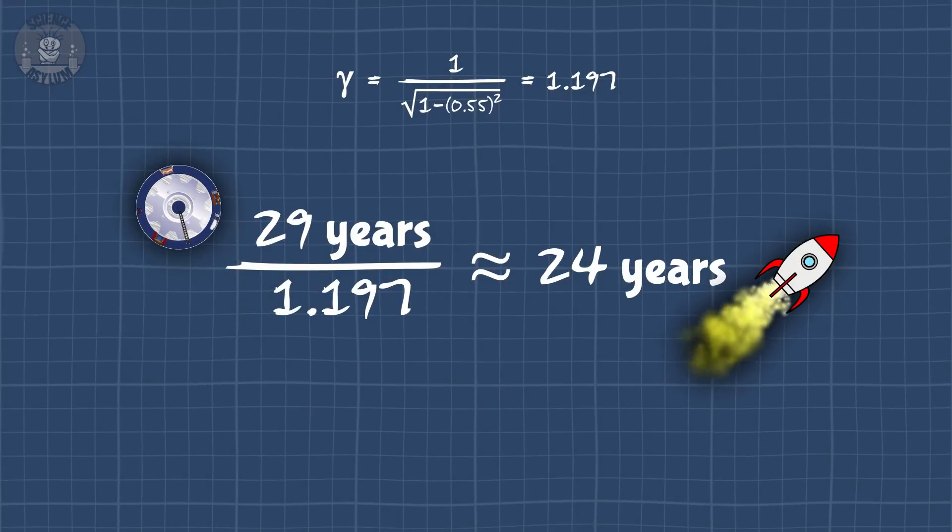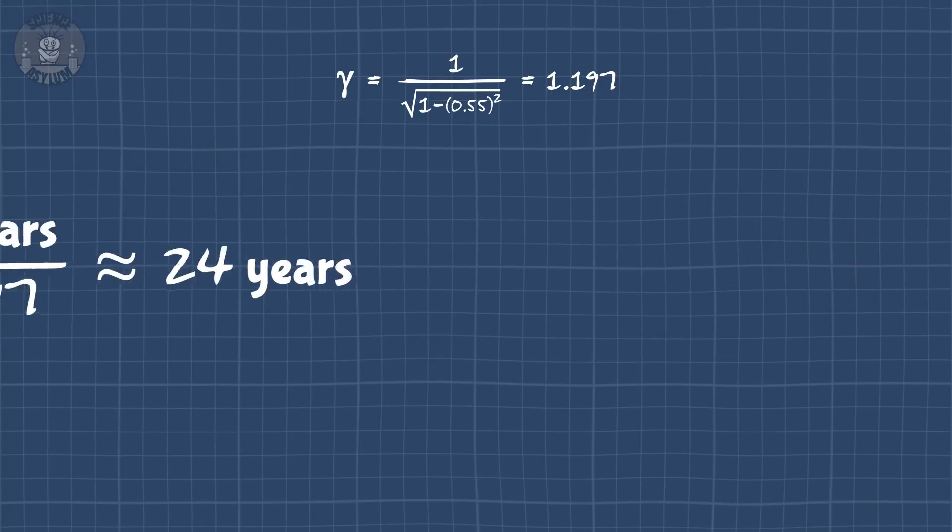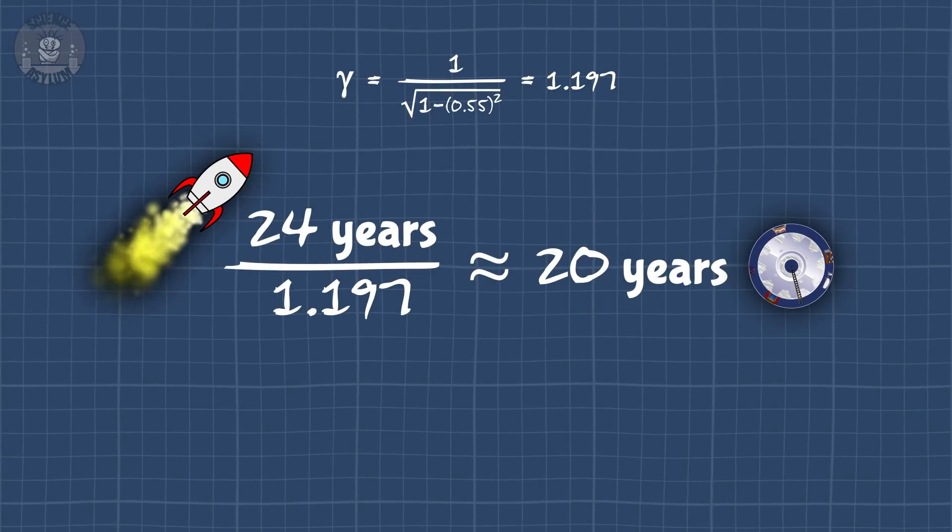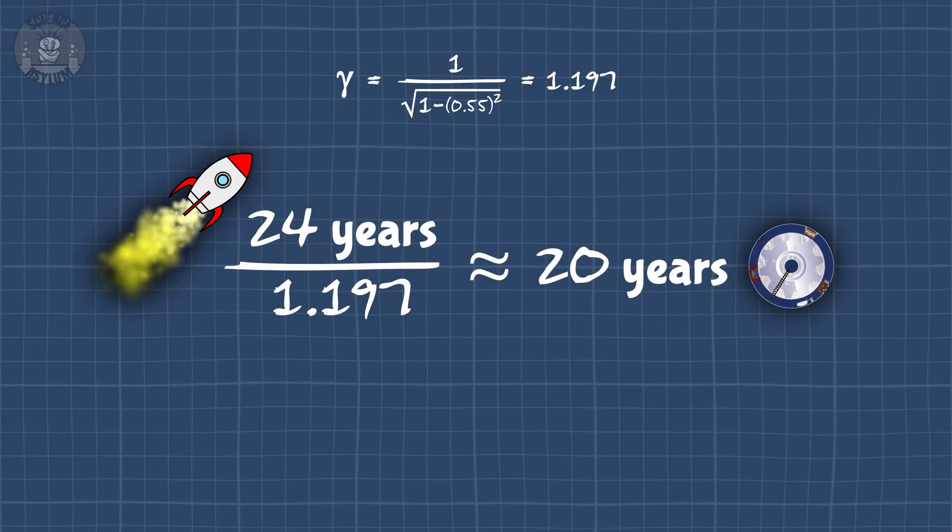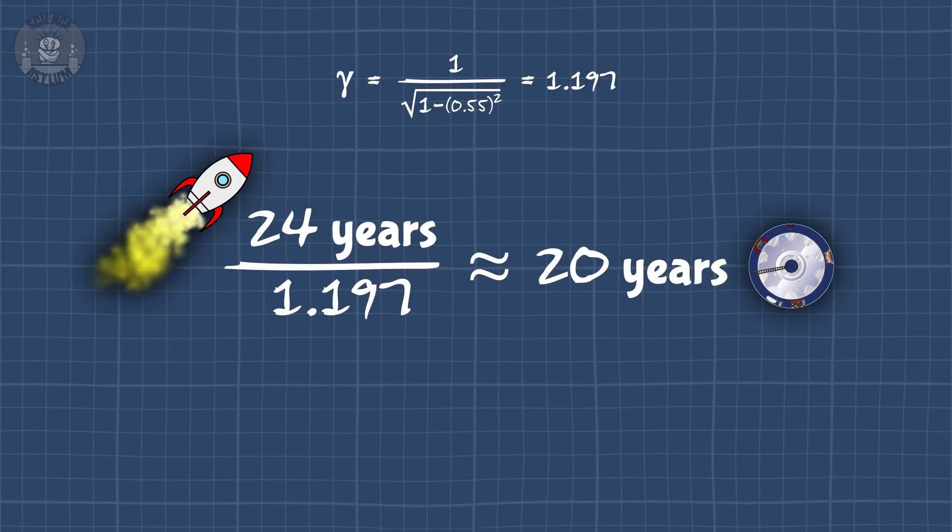Rocket Clone is the one with the paradox. He aged 24 years, and if he does the same calculation I did, he expects to find me only 20 years older, not 29 years older. He expects to be the older one. Paradox!